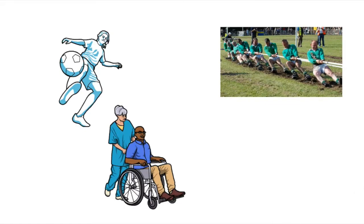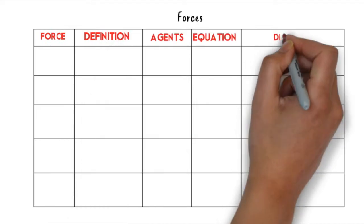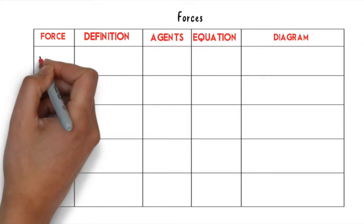In a tug of war, many forces are exerted on the contestants. These include tension exerted by the rope, friction between the contestants and the surface, normal force, and weight. The last picture shows that when standing on a weighing scale, weight force is exerted downward and the normal force is exerted upward by the surface.